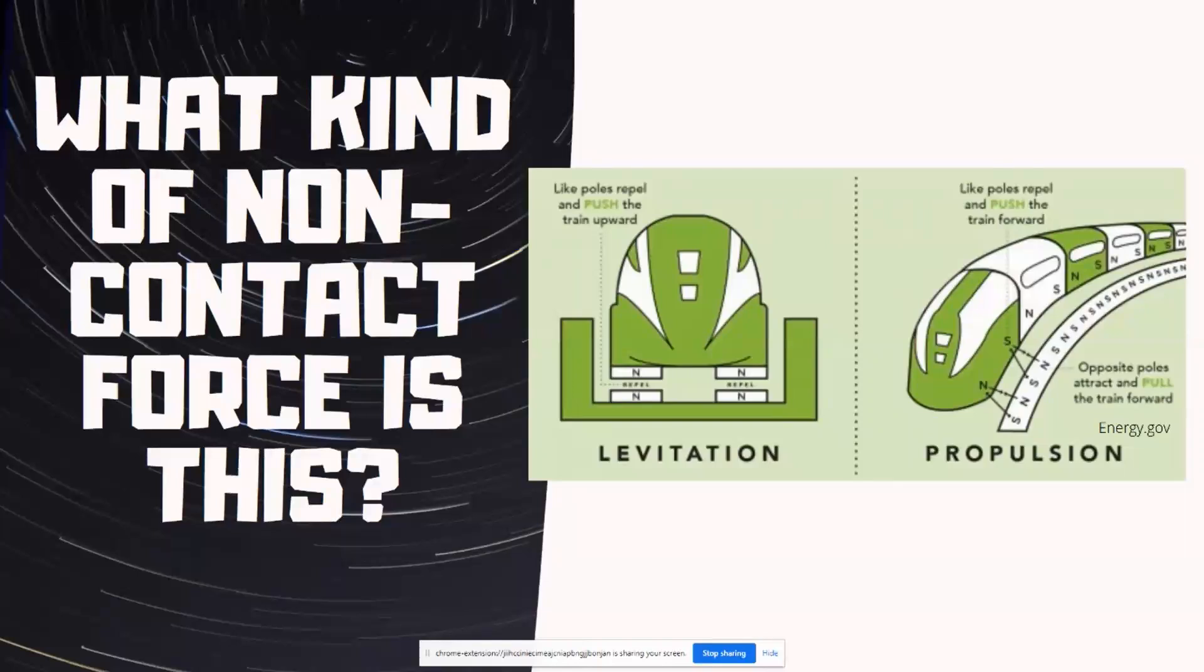So those actually repel each other and push the train upward. And then we have magnets along the side that help push the train forward and then pull the train forward. So here we have some pushes, some pulls. So we definitely know it's a force. But the question is, what kind of force is it?